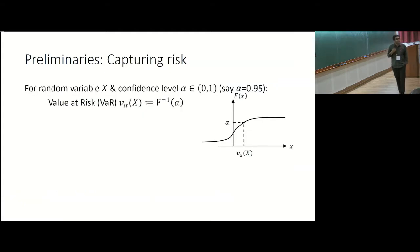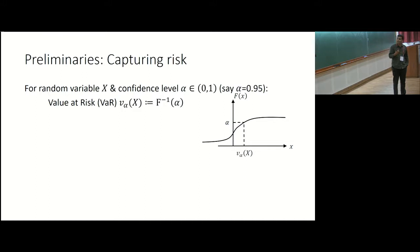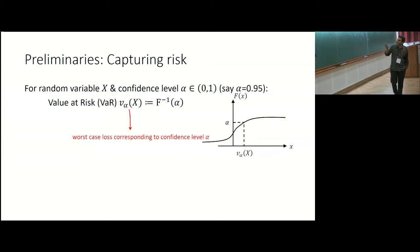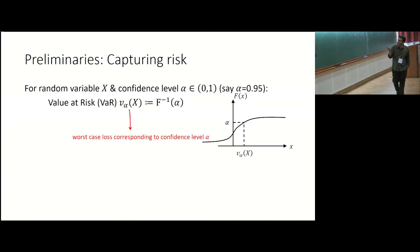Heavy-tailed distributions are ubiquitous — observed in wealth of human beings, city sizes, internet file sizes, biology, and finance. There is relatively little literature in the multi-armed bandit framework that allows for heavy-tailed rewards, and specifically none of it is environment-oblivious. Now, since we want to be risk-aware in arm selection, let me define a couple of risk preliminaries. The Value at Risk (VaR) at confidence level α is that point at which the CDF of the random variable hits level α — essentially the worst-case loss corresponding to your confidence level α.